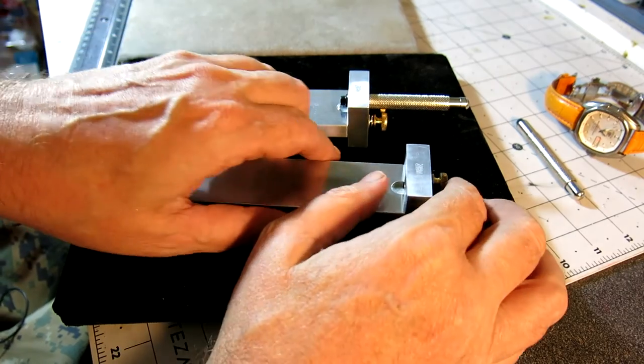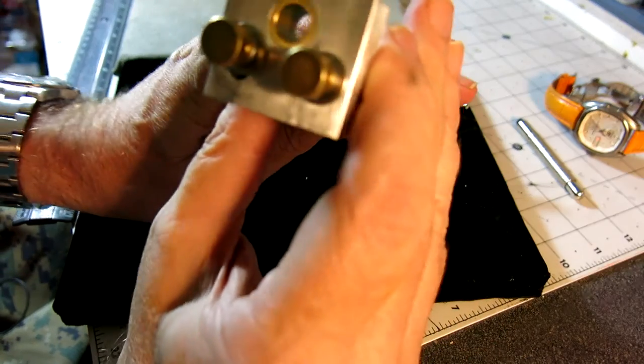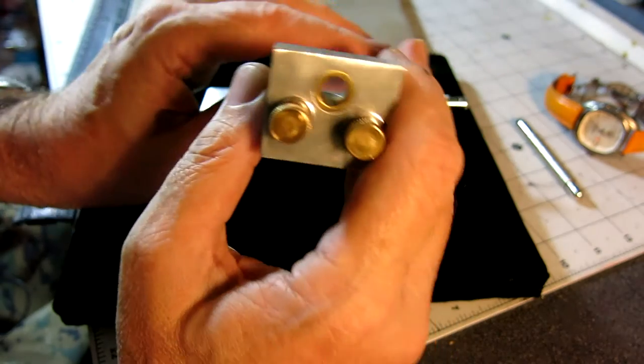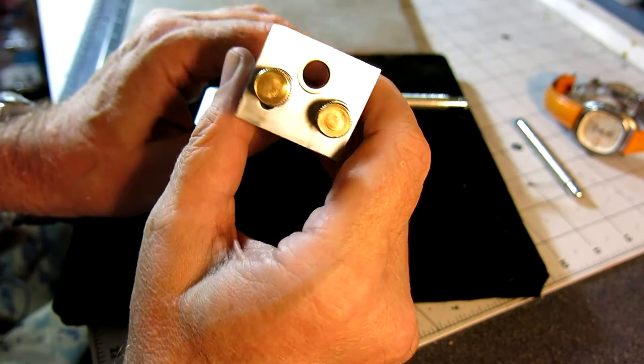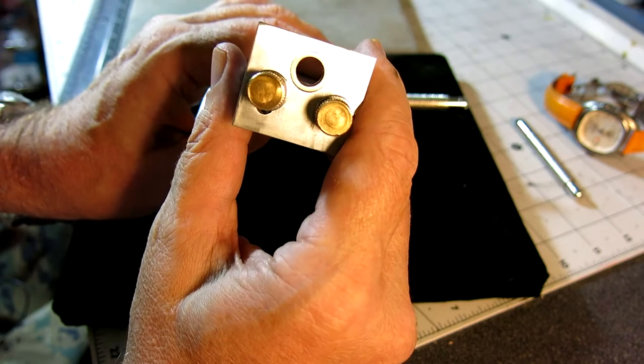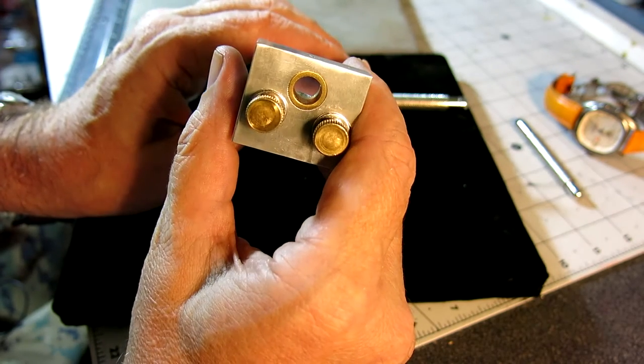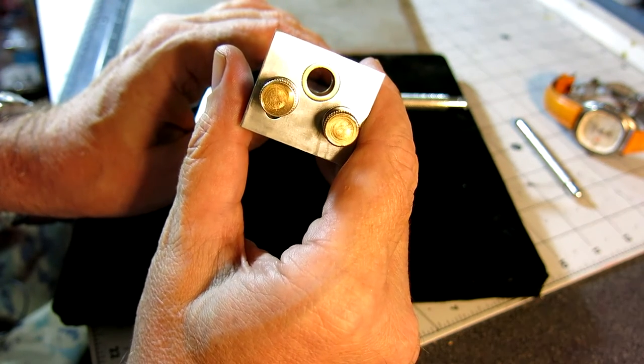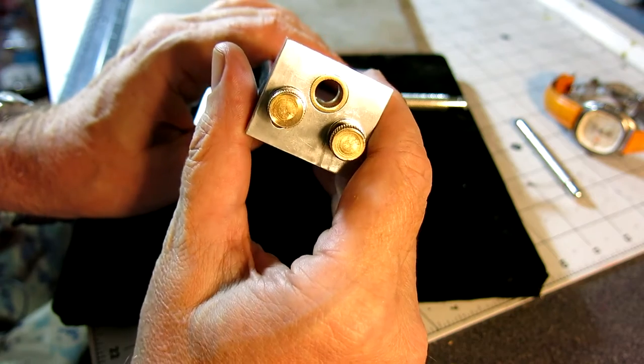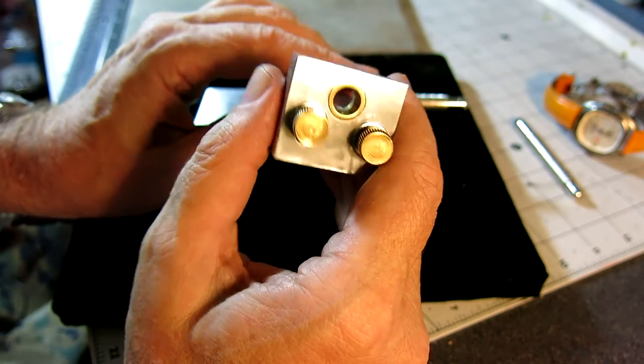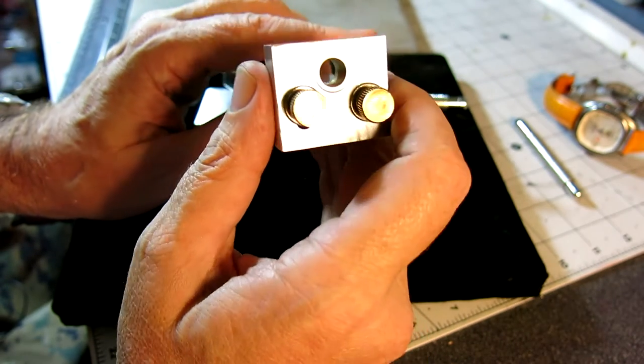One improvement I did make is I added a bushing. It's got a brass bushing now, so if you get some wear and tear on the hole, you can just replace the bushing, or I can do that for you. It makes it easier - you don't have to replace the alignment block, you can just replace the bushing.